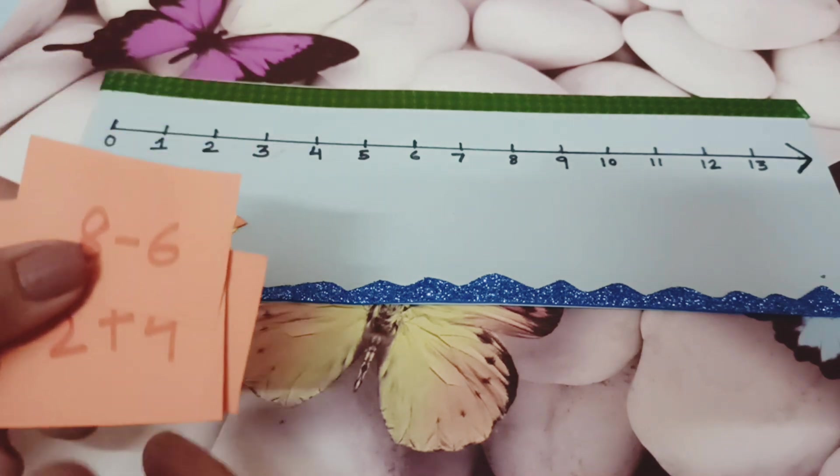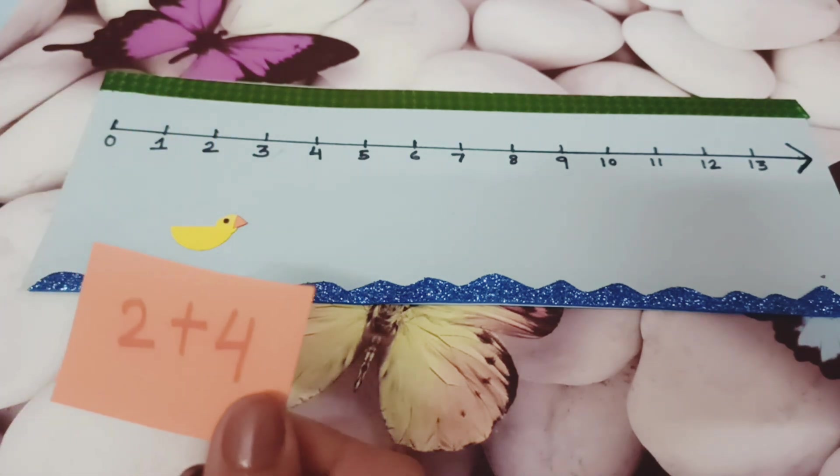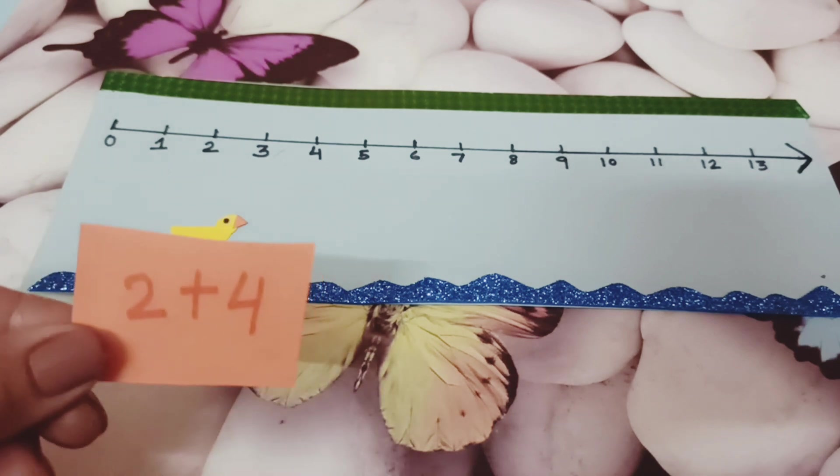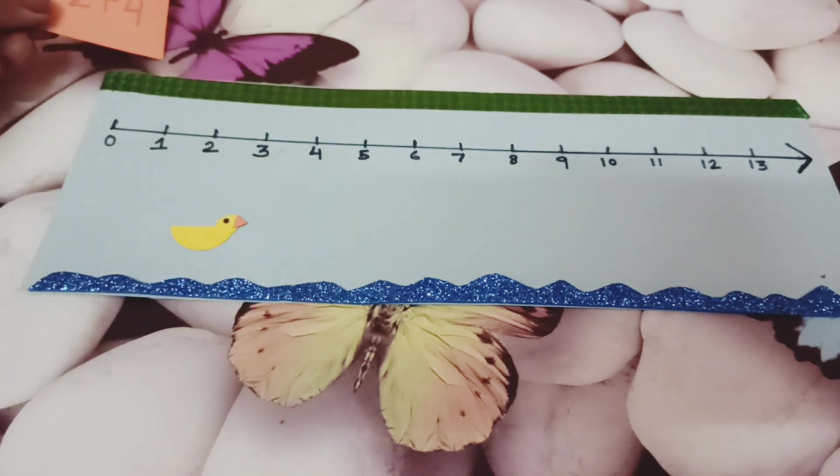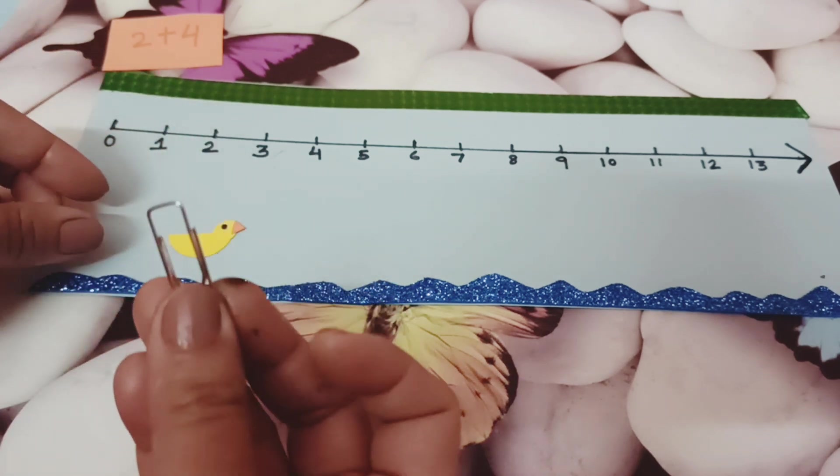So here I have some math problem cards. First I am taking addition cards. We need to add 2 with 4. So we will do this on number line. For that I am taking my duck.